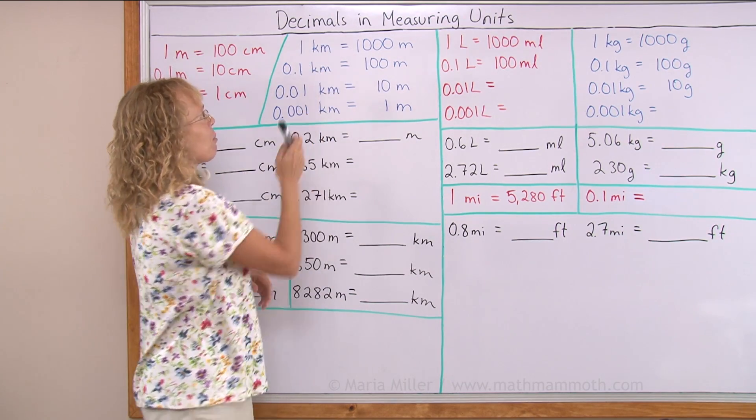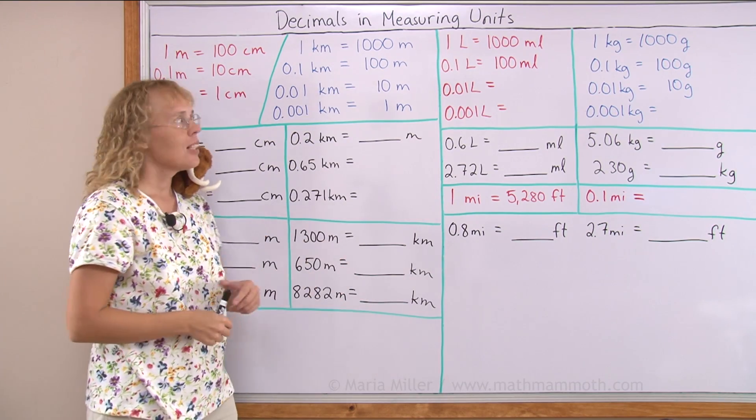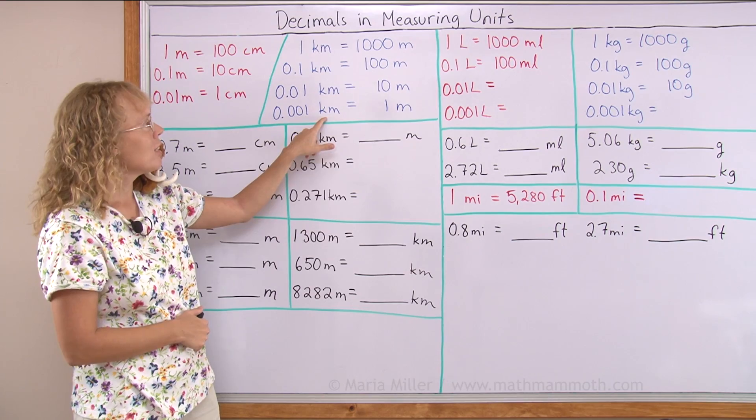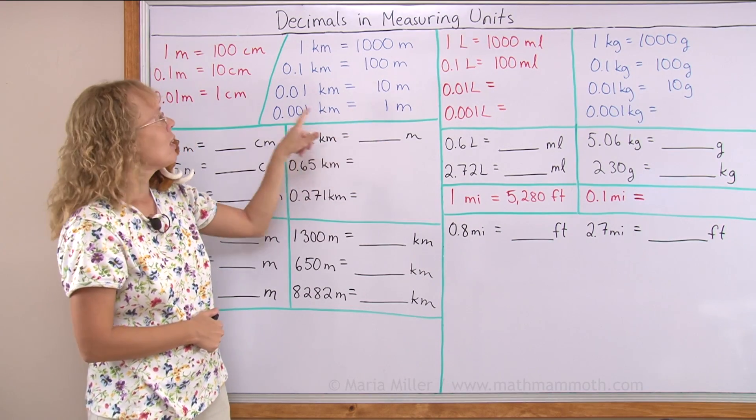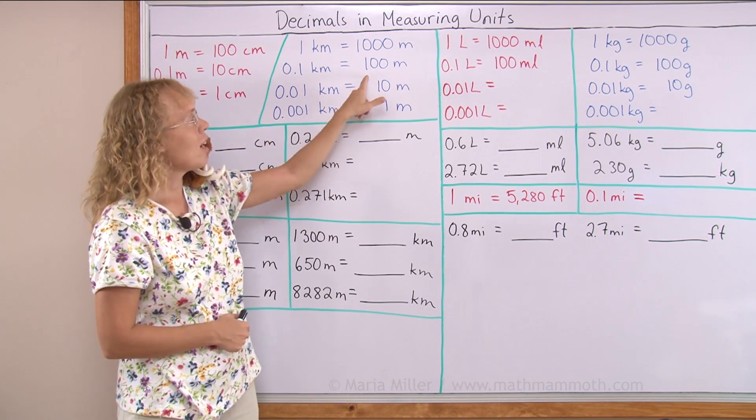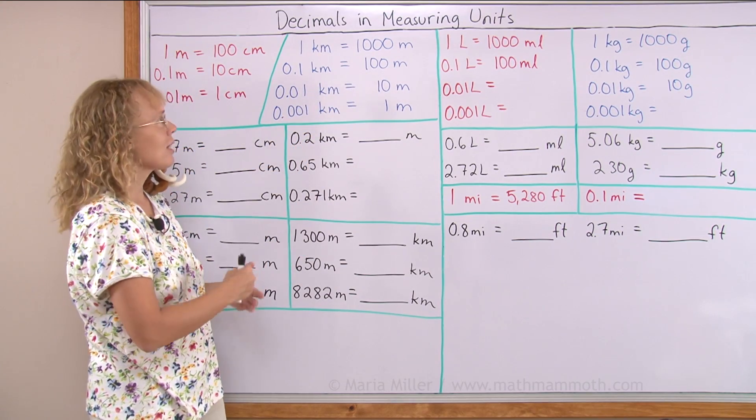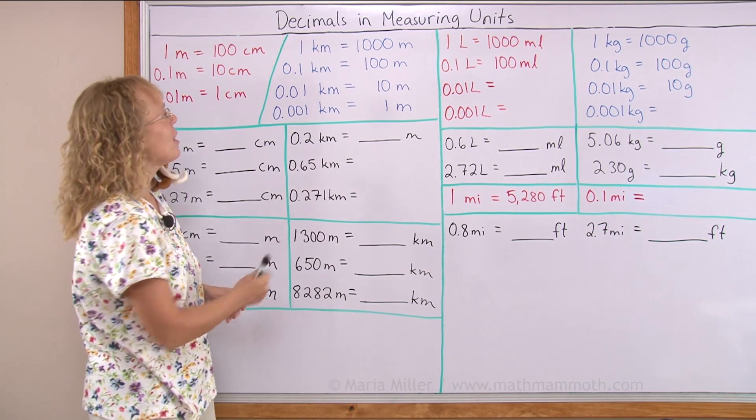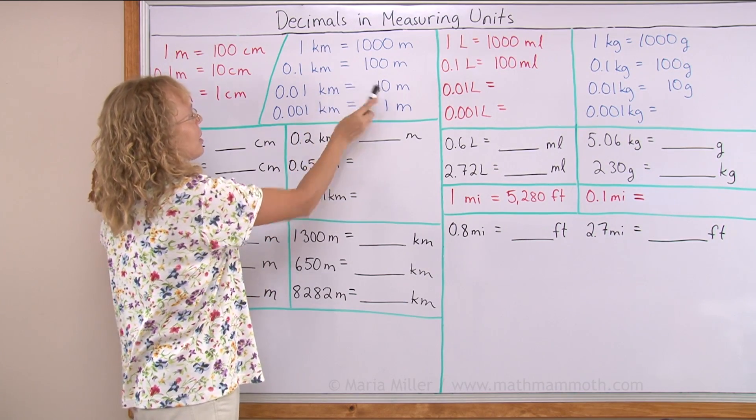If one kilometer is 1000 meters, then here's a thousandth part of a kilometer. That would be just one meter. And then we can look at tenth part of a kilometer, that would be 100 meters, because we can take 1000 meters divided by 10. And then hundredth part of a kilometer would be 10 meters.